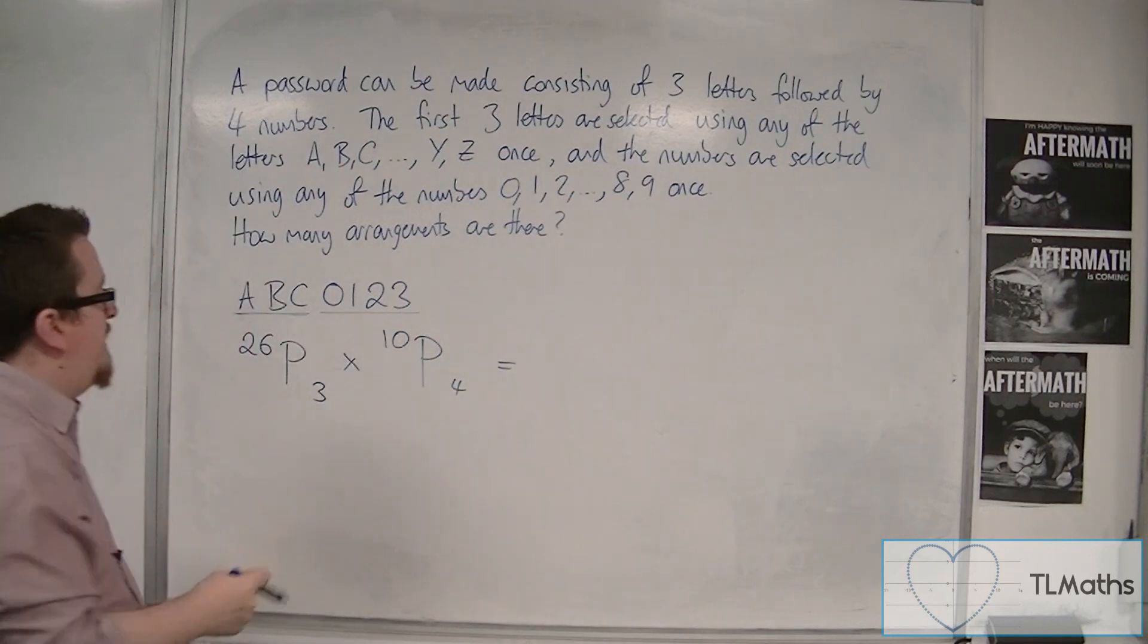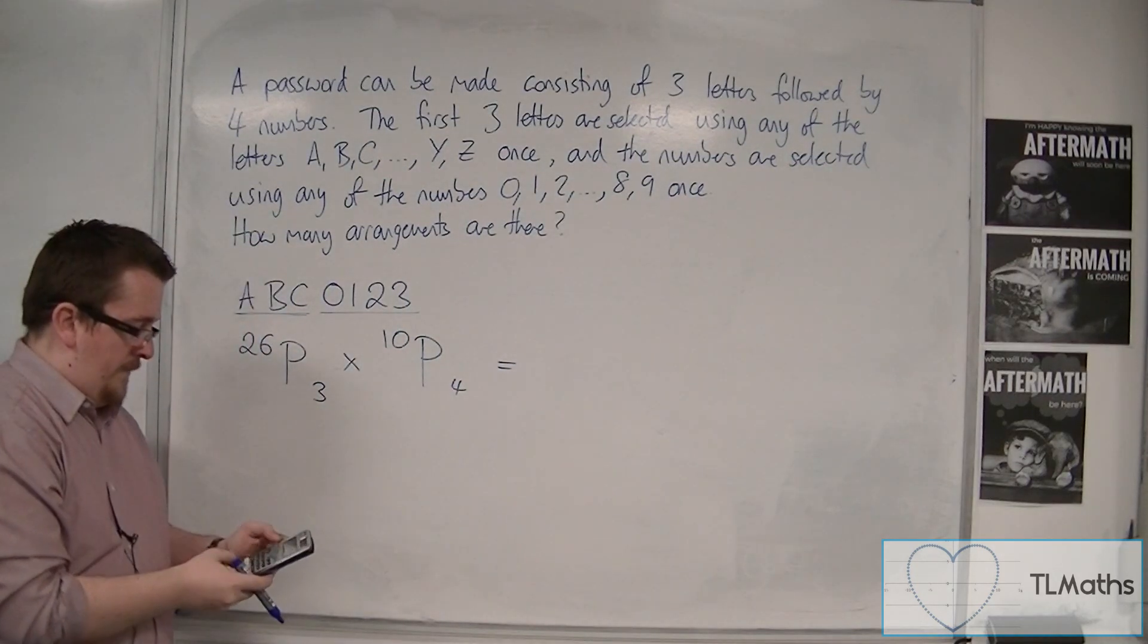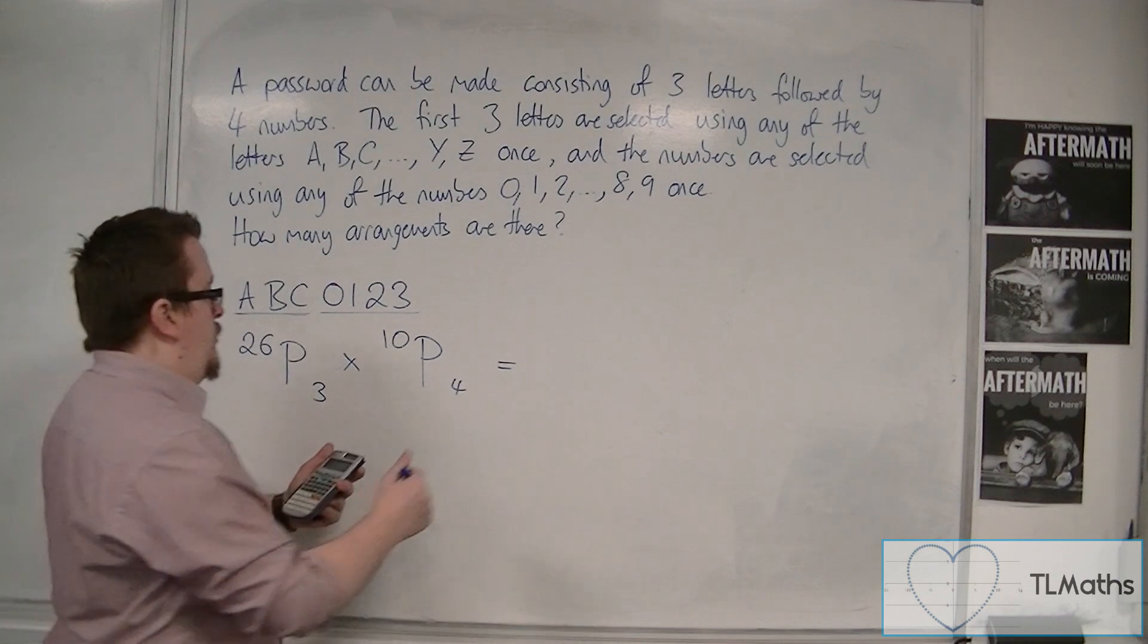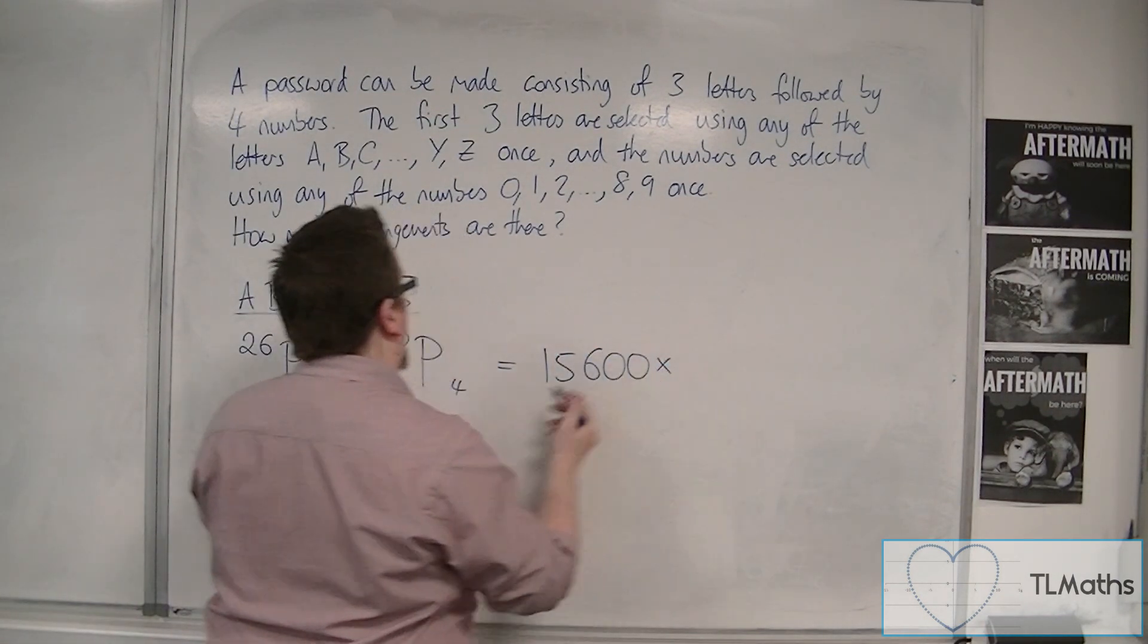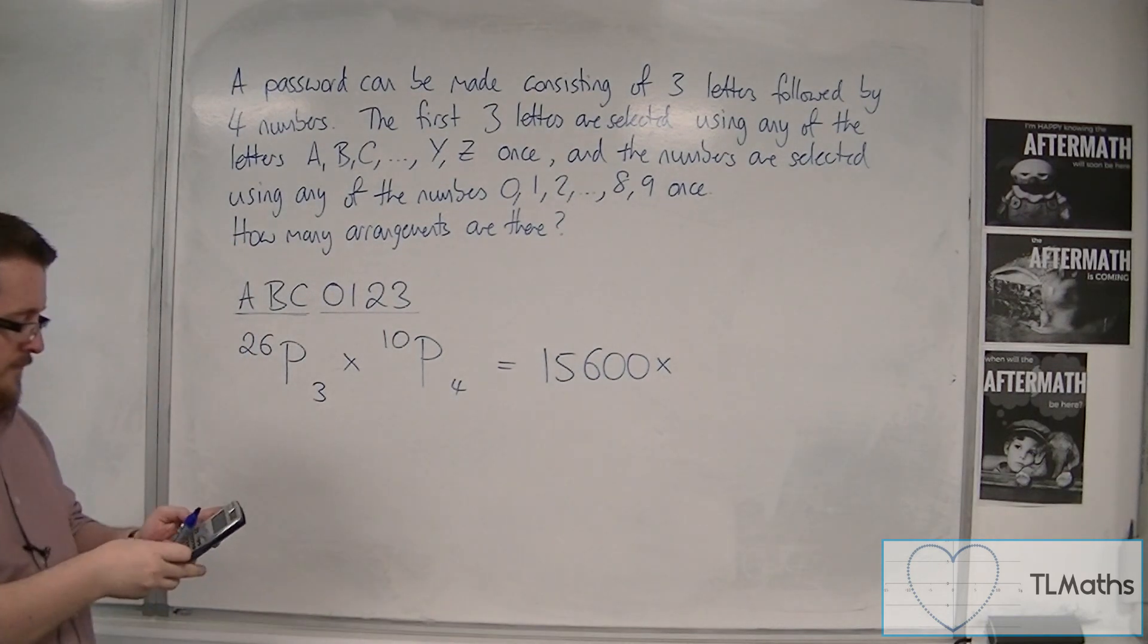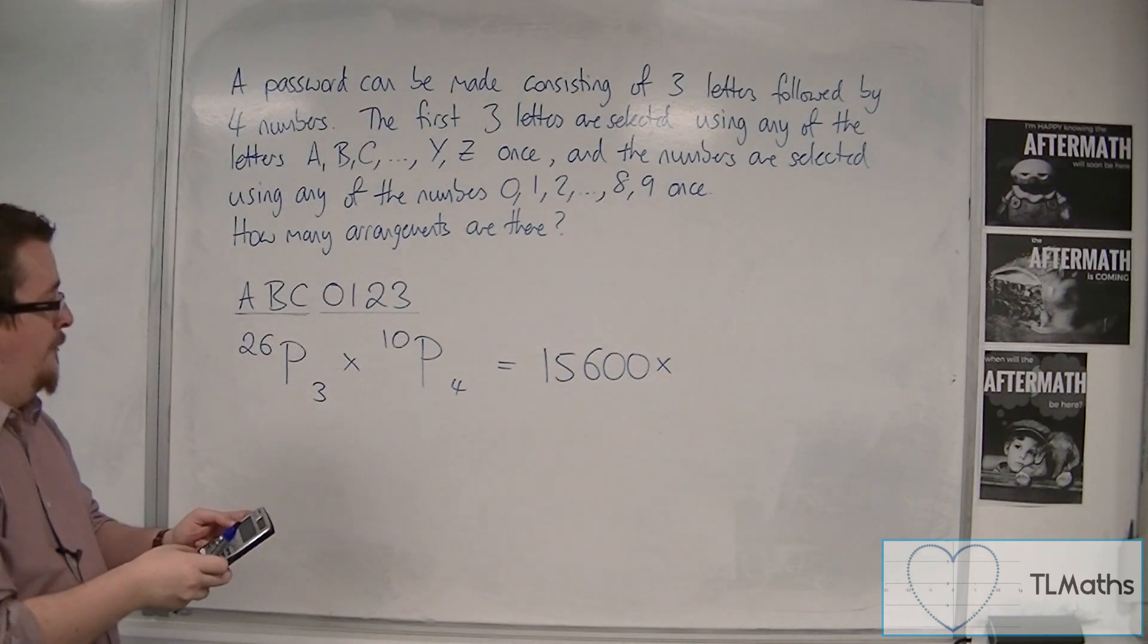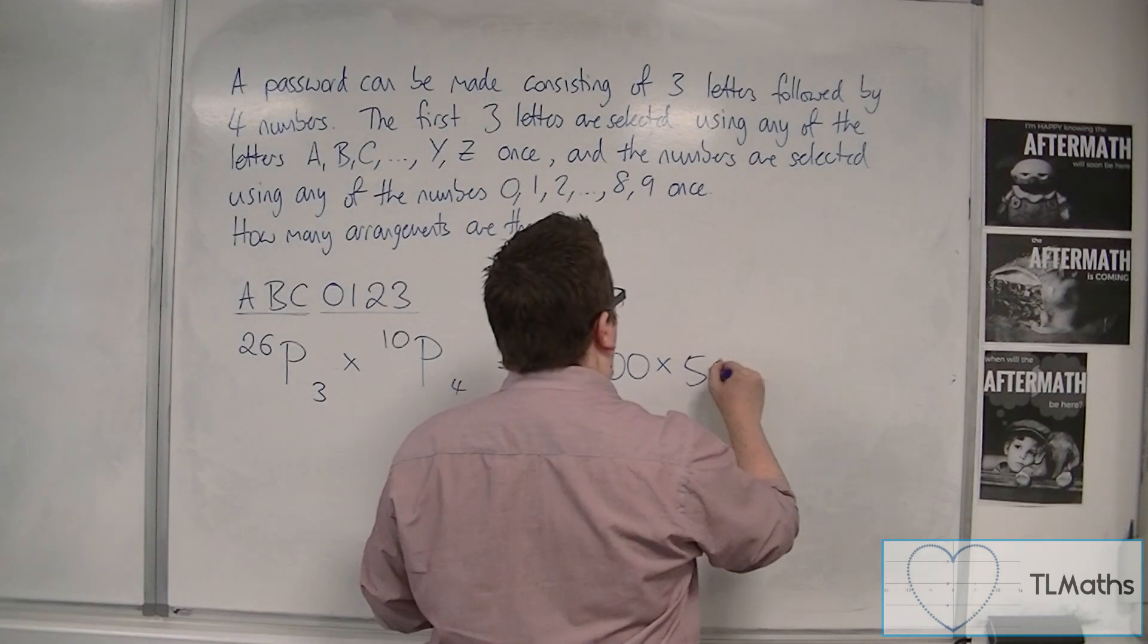So, I have 26P3, which is 15,600, times by 10P4, which is 5,040.